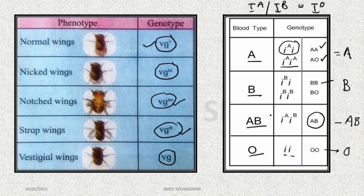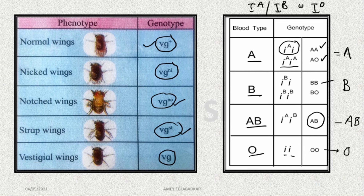A question can be asked: a person with blood group A marries a person with blood group B and produces four different offspring. What will be their blood groups? Consider them as IAIO and IBIO — this way all four combinations can be obtained in the Punnett square.